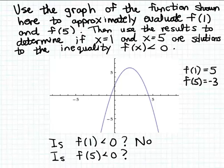On the other hand, since f of 5 is about equal to minus 3, that means that f of 5 is indeed less than 0. So the answer to this question is yes. Therefore, x equal 5 is a solution to the inequality f of x less than 0.